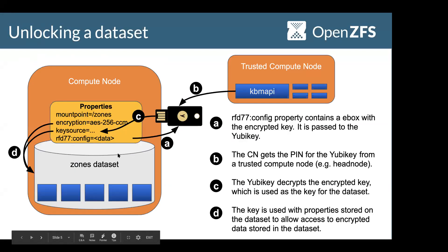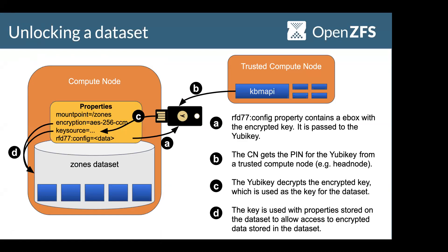The next slide is a little diagram that tries to visualize it. During the boot process, early on we set up the administration network before we import any of the storage. If the pool is encrypted, it contacts the Kaboom API service to request the PIN for the YubiKey on the system, to provide the PIN and unlock the pool. The request itself is actually signed by the YubiKey, so the token has to be present to even get the PIN — someone can't just ask for the PIN without the token. Once it has that, it can decrypt, load the key, and mount up all the file systems and proceed normally.